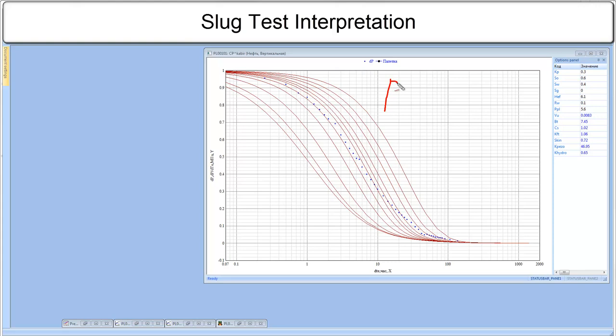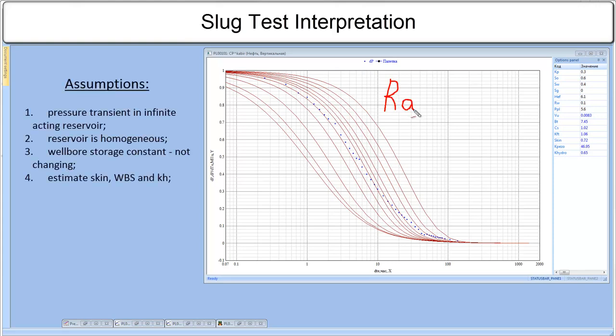There have been presented a few methods of interpretation of slug test, but the one proposed by Ramey is believed to be the best to fit the purpose. So, what are the assumptions of the model? They are as follows. Reservoir is infinite acting. Reservoir is homogeneous. Wellbore storage is constant. It's not changing. And only skin factor, wellbore storage and permeability can be estimated.